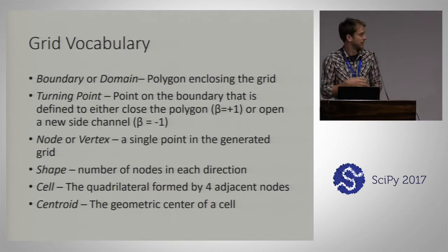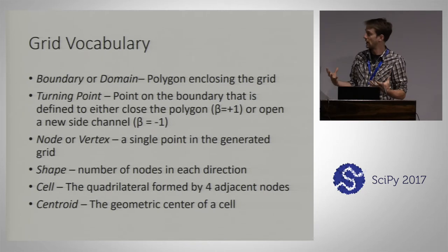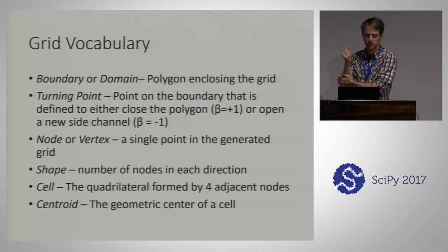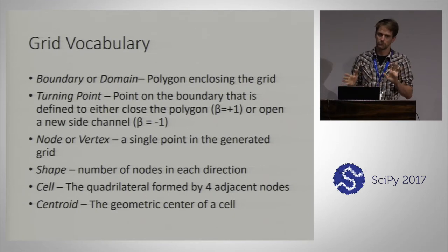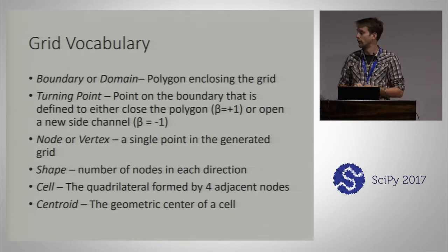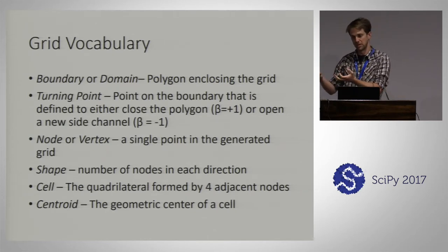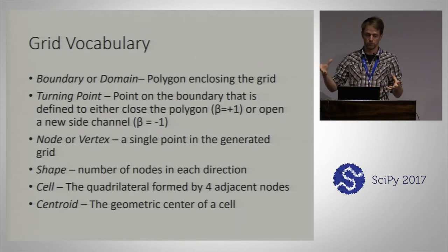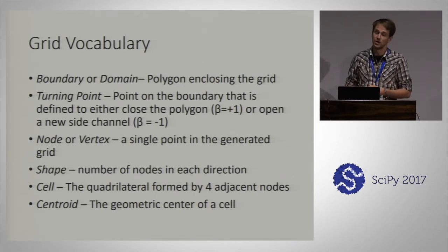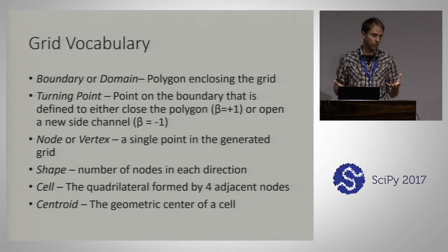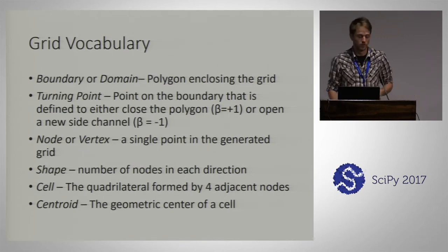Here's some basic vocabulary for talking about grids. The boundary of the domain is the polygon enclosing the generated grid. There's the concept of a turning point — points on the boundary that work to close or open up side channels in your domain. A node or vertex is the actual output — the components of the grid where points get placed. The shape is your number of nodes in each direction, much like a NumPy array has a shape. A cell is a quadrilateral defined by four adjacent points within your grid, and then you have the centroid of a cell.